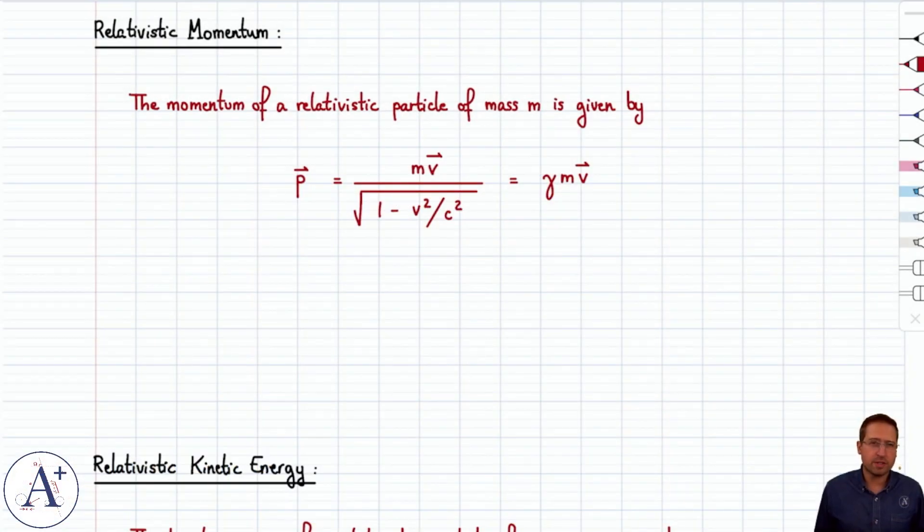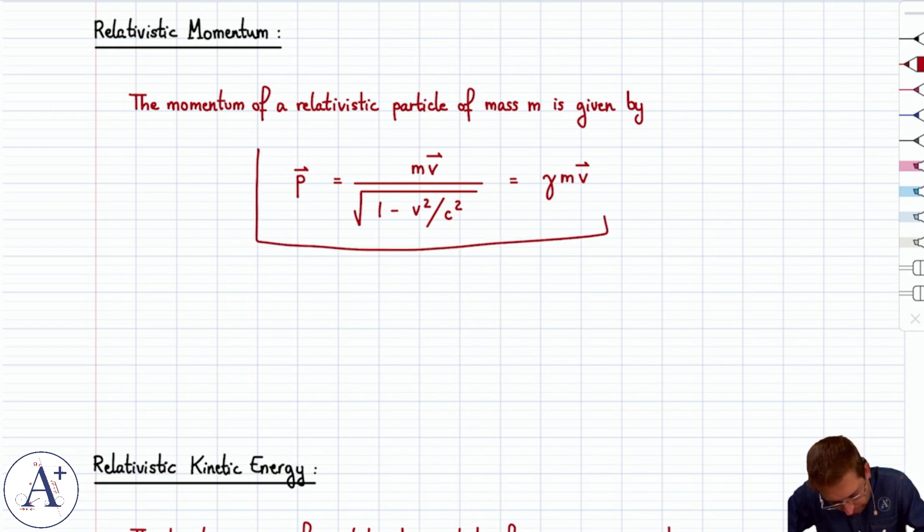Let's wrap up this special relativity chapter with a couple of formulas for relativistic momentum and relativistic kinetic energy. Let's start with momentum. The momentum p of a relativistic particle that has a mass m is equal to gamma mv.